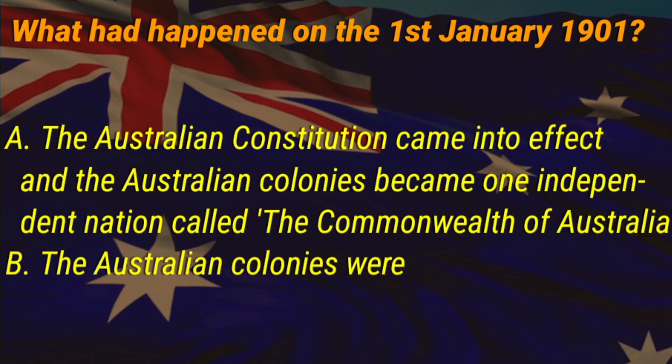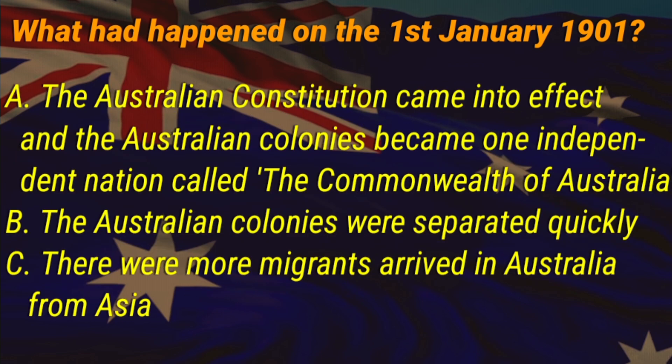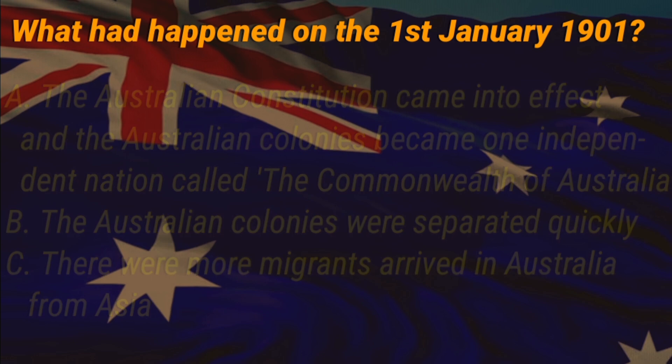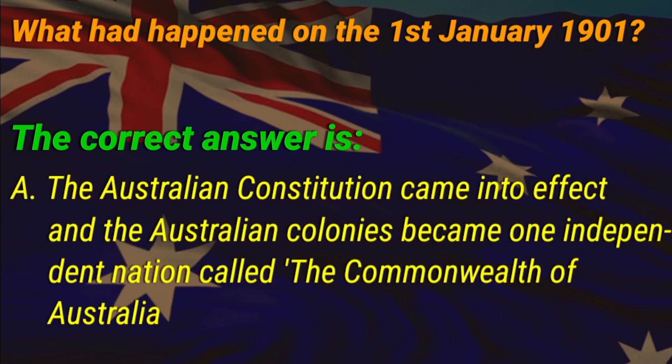A: in 1901, B: in 1902, C: in 1801. The correct answer is A, in 1901. What happened on 1st January 1901? A: the Australian Constitution came into effect and the Australian colonies became one independent nation called the Commonwealth of Australia, B: the Australian colonies were separated, C: more migrants arrived in Australia from Asia. The correct answer is A, the Australian Constitution came into effect.